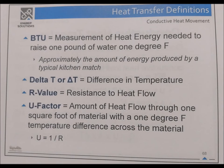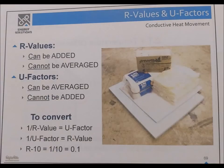R-values and U-factors: R-values can be added but cannot be averaged. U-factors can be averaged but cannot be added. To convert: 1 divided by R equals the U-factor; 1 divided by U equals the R-value. For example, R-10 gives a U-factor of 1 divided by 10 equals 0.1.